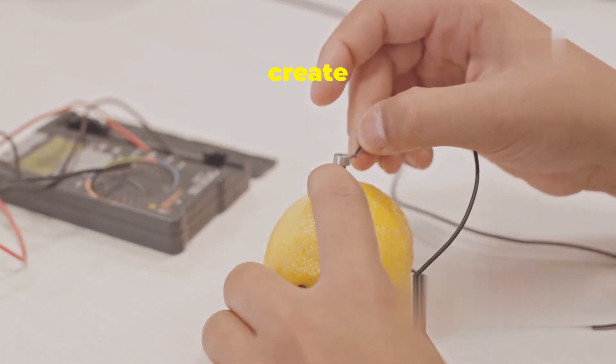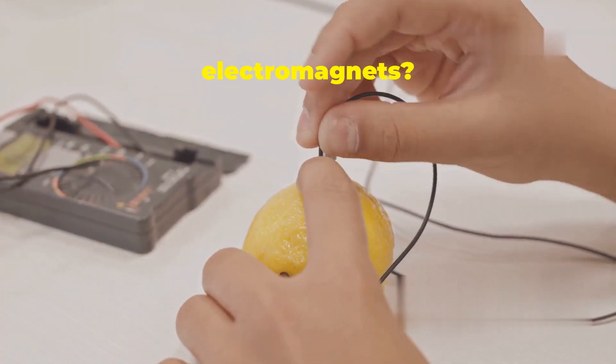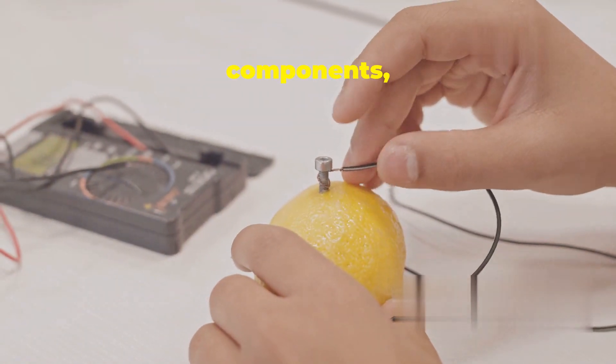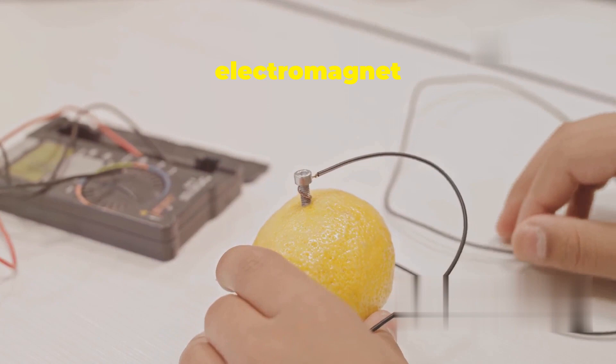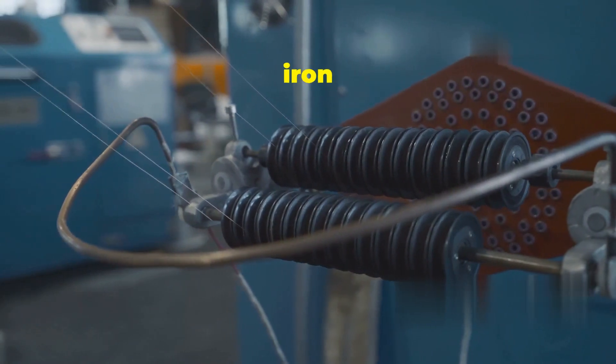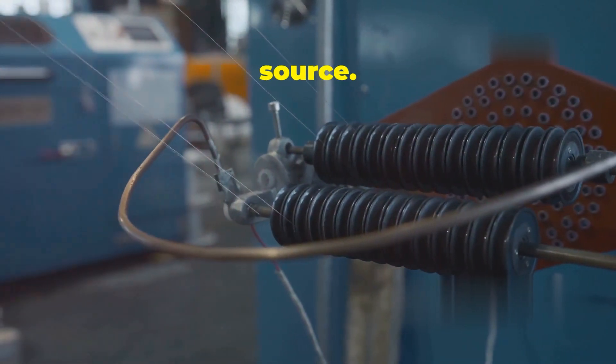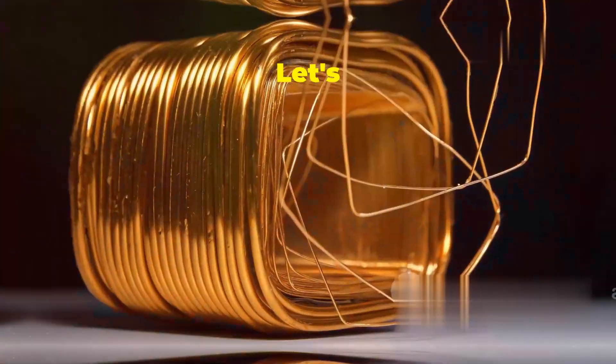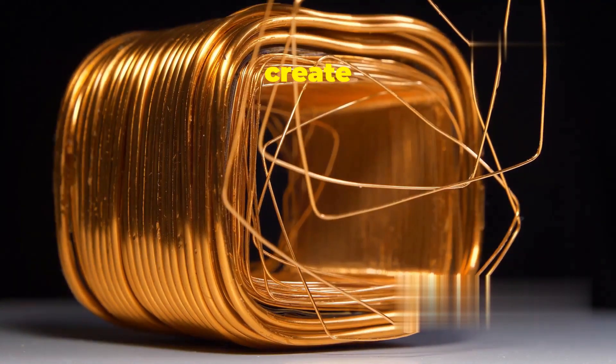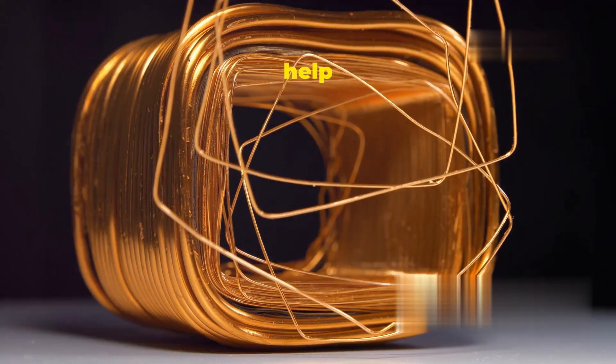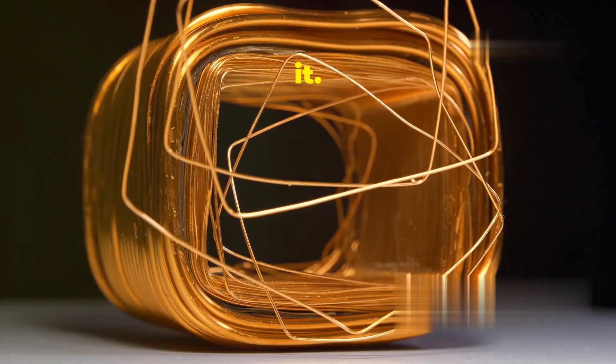So how do we create these amazing electromagnets? It's simpler than you might think. With just a few basic components, you can build your very own electromagnet at home or in a lab. You only need three basic ingredients: a coil of wire, an iron core, and a power source. These components are easy to find and assemble. Let's break down each component and see how they work together to create the magic of electromagnetism. Understanding each part will help you appreciate the science behind it.